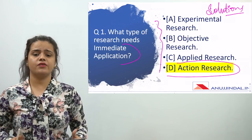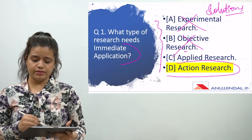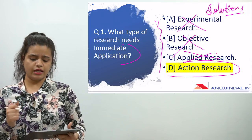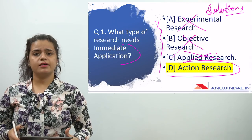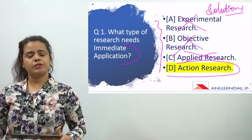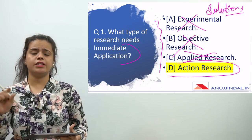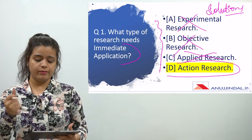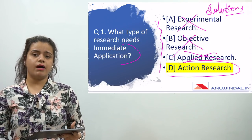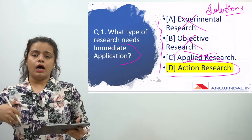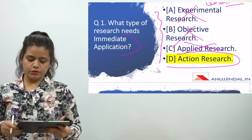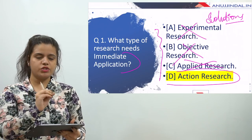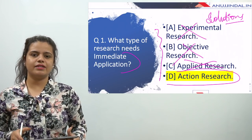When you use action research, it is not experimental research, it is not objective research, it can't be applied research — it is only action research. Every question from types of research or methods of research always asks from the definition of that research. So you have to keep in mind what the meaning of action research is and what the meaning of experimental research is. So the first question is about action research, which needs immediate application.